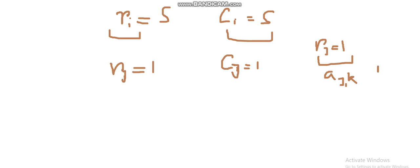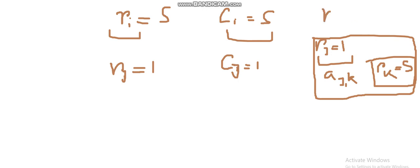If R_j equals 1 and A_j,k is black, then C_k will be N. In our case N equals 5, so I'm taking 5 as an example. So if R_j equals 1 and A_j,k is black, then C_k will be equals to 5. Same goes for column.